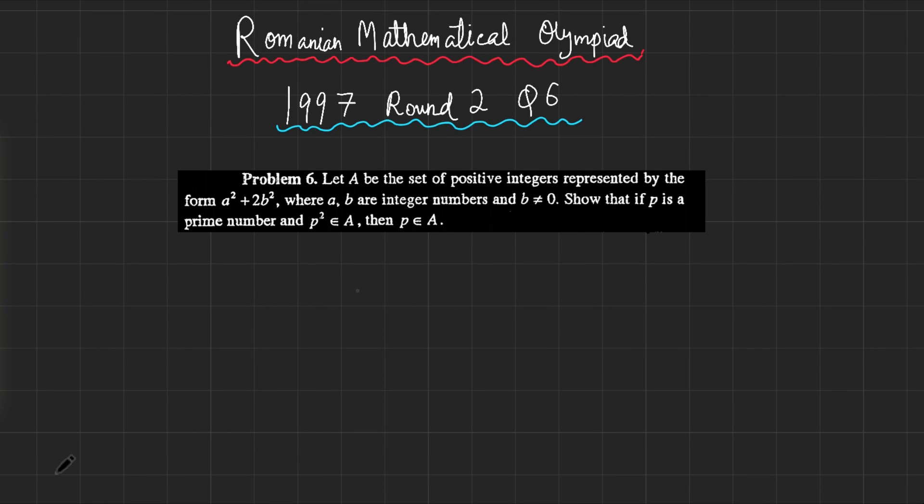Hi, today we are going to be going over a problem from the Romanian Mathematical Olympiad. This was problem 3 in round 2 in 1997. The problem says, let A be the set of positive integers represented by the form a squared plus 2b squared, where a, b are integer numbers and b is not equal to 0. Show that if p is a prime number and p squared is in A, then p is also in A.